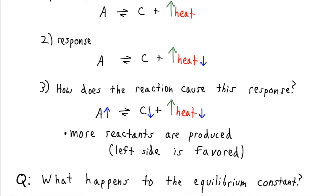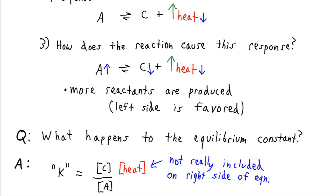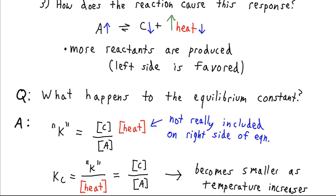What happens to the equilibrium constant here? If we were to write it out for the reaction as written, we would have the concentration of C times the concentration of heat divided by the concentration of A. But this was just a pretend trick for working out Le Chatelier's — we can't actually measure a concentration of heat, so it doesn't actually appear in our equilibrium expression. Instead, it gets built into the constant. Dividing heat out to the left side, we get the familiar equilibrium expression. But the heat is still affecting the value of the constant, and it should be clear that the equilibrium constant is going to decrease as the temperature increases.